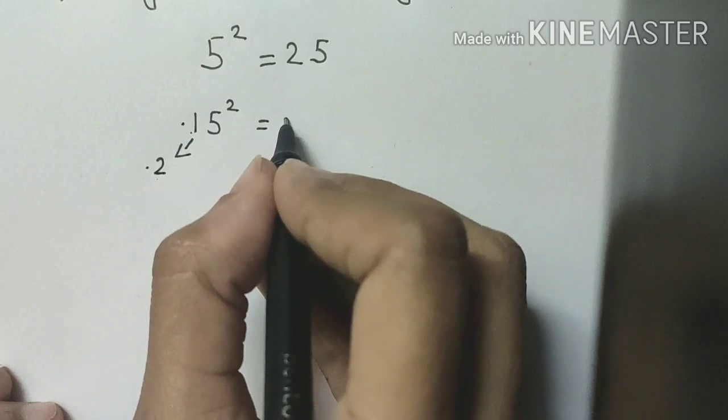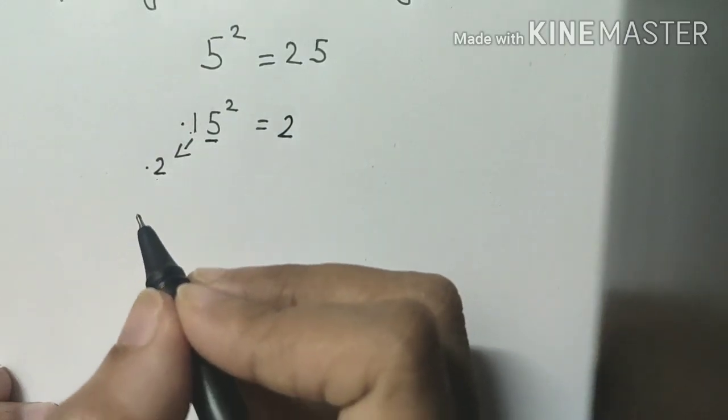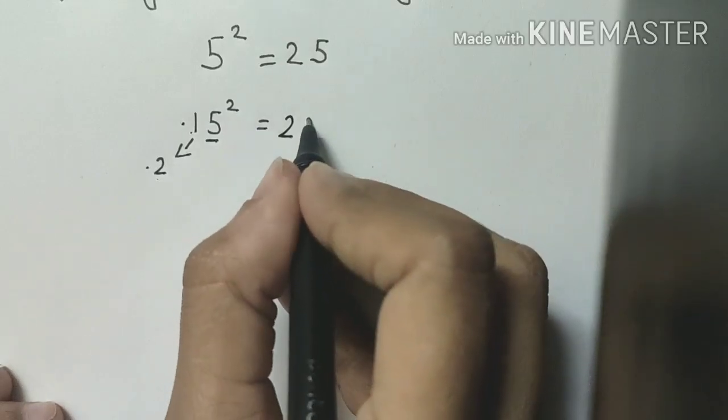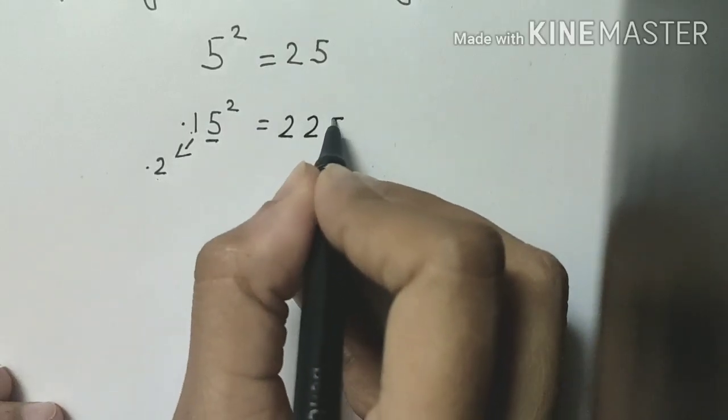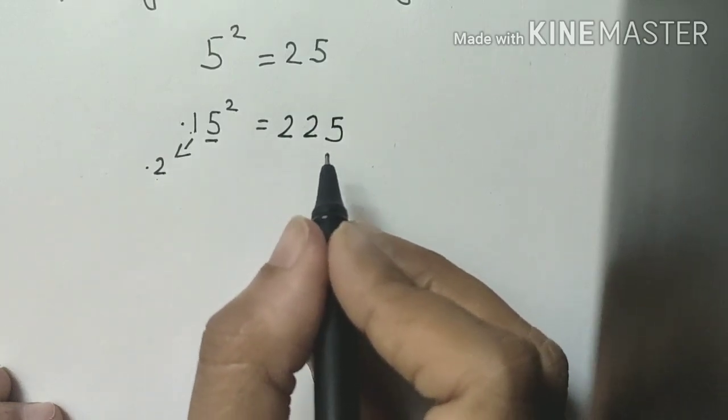So 2 × 1 is 2, and you know that the square of 5 is 25. So write down 25 here. So the square of 15 is 225.